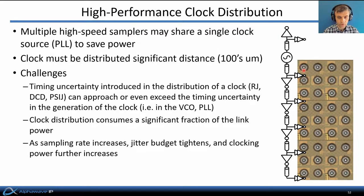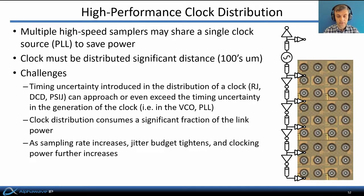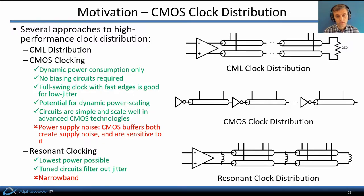There's timing uncertainty introduced — random jitter (RJ), duty cycle distortion (DCD), and power supply induced jitter (PSIJ) — that can approach or even exceed the timing uncertainty arising in the generation of the clock in the VCO and PLL itself. The buffers required to distribute the clock this long distance can consume a significant fraction of the link power, especially for very short-reach simple transceivers such as die-to-die interfaces. As we go to higher sampling rates, the jitter budget tightens, performance requirements increase, and power consumption increases even further.